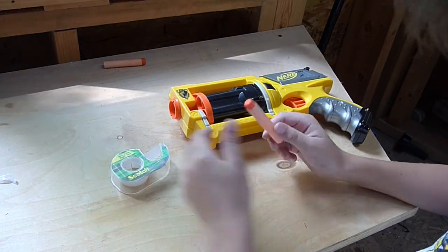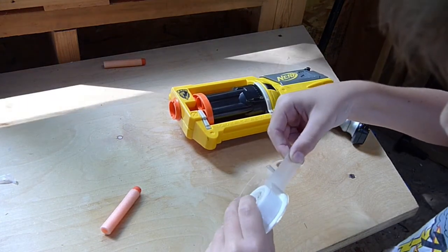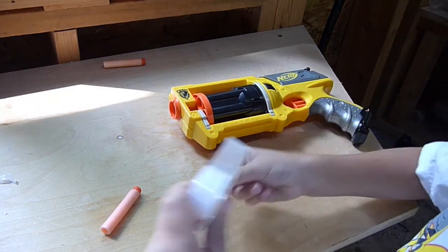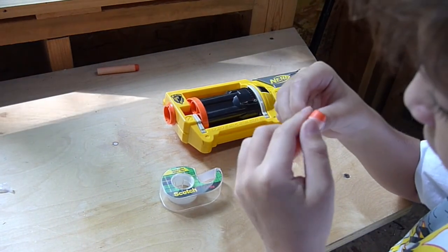So what you're going to want to do is take some of the scotch tape and put it around the edge of the Nerf bullet.